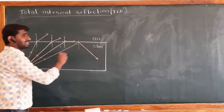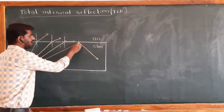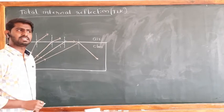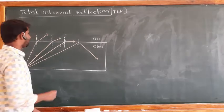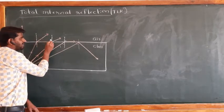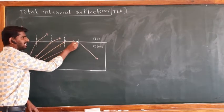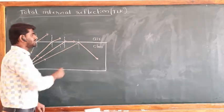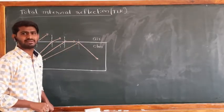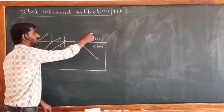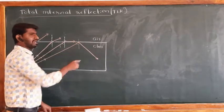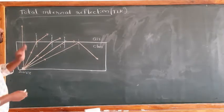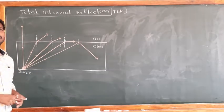Beyond this point, the light is reflected back to the same medium. There is no transmission of light from the glass to the air — the entire light is reflected back to the same medium. This phenomenon is called Total Internal Reflection.